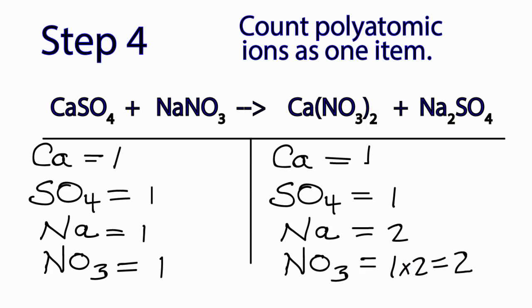So I have two NO3s. So if I put the coefficient of two right here, that means I'll have one times two, two Na's. But this two also multiplies across. So one times two for the NO3s, that gives me two. And now everything is balanced.